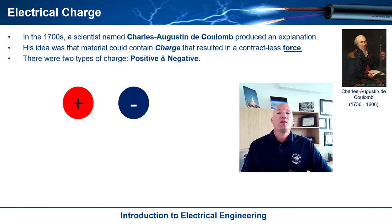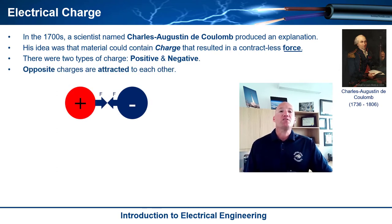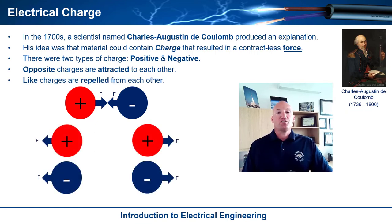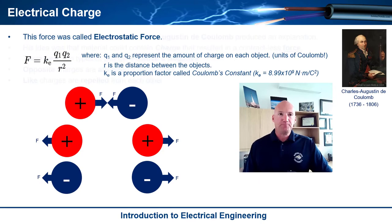And he came up with this framework where there were two types of charge. There was positive charge and there was negative charge. And opposite charges were attracted to each other. And like charges were repelled from each other. So a positive and a positive would push against each other. And negative and negative would push against each other.